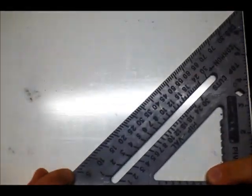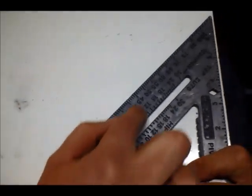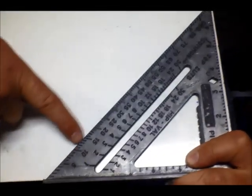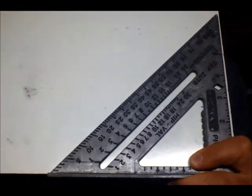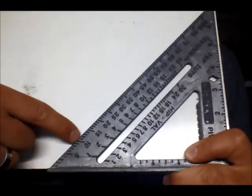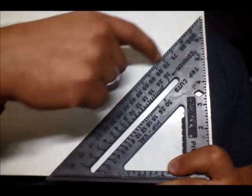All right, when you try to find an angle on something, you can actually use your speed square to do that. Now all these numbers right over here, all these ones right here, these are all your numbers to find different angles. You get your 5, your 10, 15, 20, and so on, all the way up to 90.